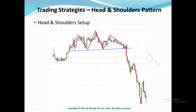So when do we know 50% of the right shoulder is formed? It's simple — look for candlestick reversal patterns that we have discussed in the price action trading series. When it comes to the target, the target for this pattern is arrived at by measuring the height of the head from the neckline. So if the height of the head is 100 points, then your technical target from this breakout will be 100 points.